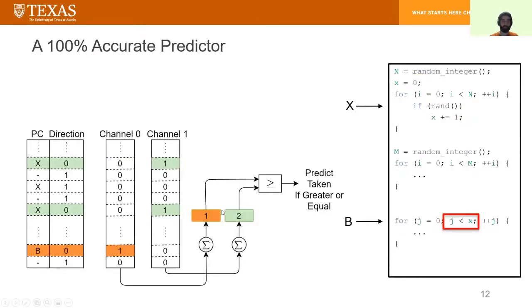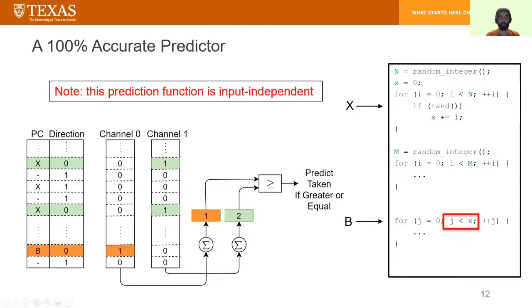Putting these two pieces next to each other and adding a comparator, we can now have a perfect 100% accurate branch predictor. Note that the prediction function that this hardware represents is input independent because it follows the program semantics in the source code.